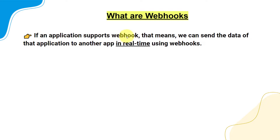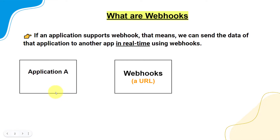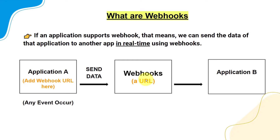If an application supports Webhook, that means we can send the data of that application to another application in real time using Webhooks. You can understand a Webhook as a URL. Assume we have a Webhook URL and an application A whose data we would like to send to a different application. We copy this Webhook URL, add it into application A, and whenever any event occurs, that event data will automatically be sent to the Webhook URL. Once the Webhook contains that data, we can send it to application B. Here you can consider application A as a form builder or payment gateway, and application B as a MySQL database.